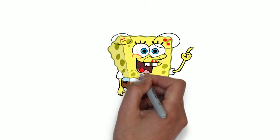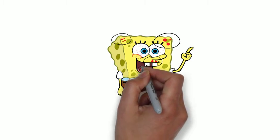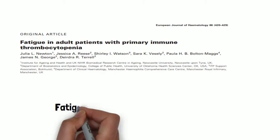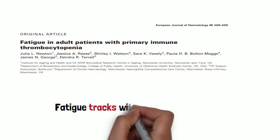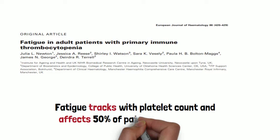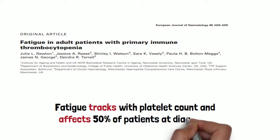Hemorrhagic blisters in mucous membranes is called wet purpura. It is a predictor of more severe bleeding and it should prompt reappraisal of platelet count and need for ITP therapy. Petechiae tracks very well with platelet count and it affects about 50% of patients at diagnosis.